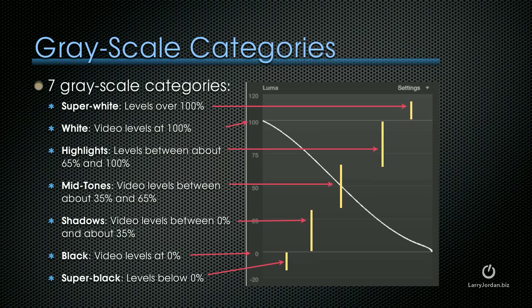When we talk grayscale, we use terms like highlights and shadows. This represents the range in grayscale value from very bright at the top to very dark at the bottom — this is a close-up from the waveform monitor. There are seven grayscale categories. Grayscale greater than 100% is called super white. Values right on that line are called white. The top third of grayscale, between roughly 65% and 100%, are called highlights. In the middle of the scope are mids, or mid-tones, or mid-grays. Shadows are the lower third, from roughly 0% to 35%. Black is at 0, and super black is below 0.